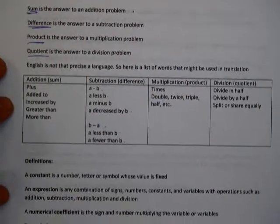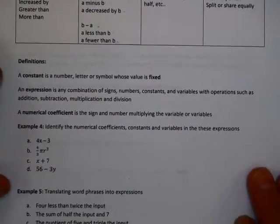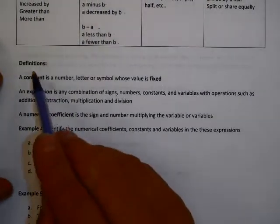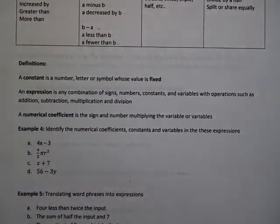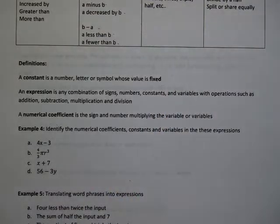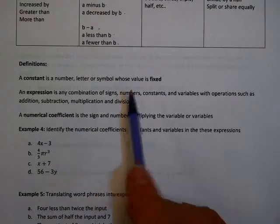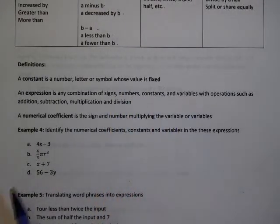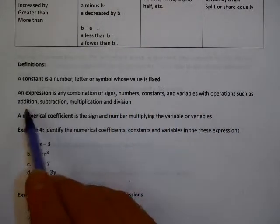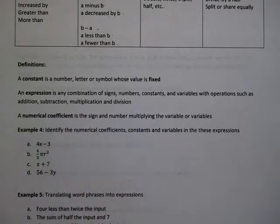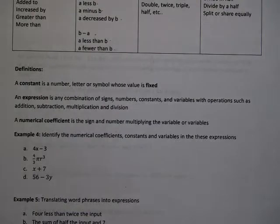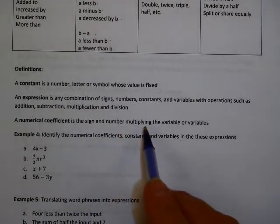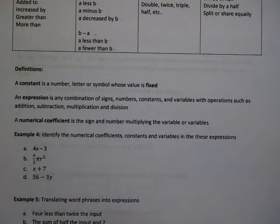Here are a few definitions that help us write expressions and equations. A constant is a number, letter, or symbol whose value is fixed — for example, 3 or pi. An expression is a combination of signs, numbers, constants, and variables with operations such as addition, subtraction, multiplication, and division. A numerical coefficient is a sign and a number multiplying the variable or variables.